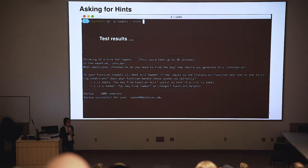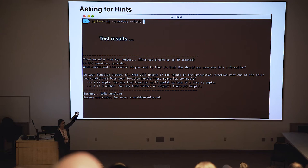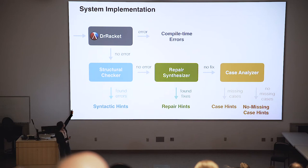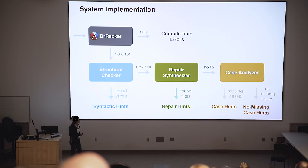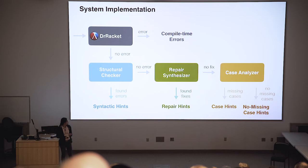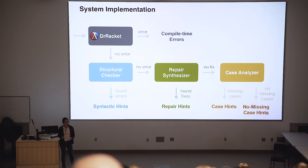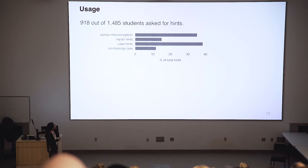Taking all three techniques together, we implemented the system and integrated it with the autograder of the course. Students can ask for a hint simply by providing the hint flag to the autograder; it thinks for a few seconds and then displays the message. When a hint is asked, we first run DrRacket to filter out compile-time errors, and then invoke the three techniques in a chain. For the case analyzer, if the student program already contains all the necessary cases, we display a generic message saying there are already all the necessary cases but there's still some logic error in the program. We deployed the system and here are some stats from Spring 2016.